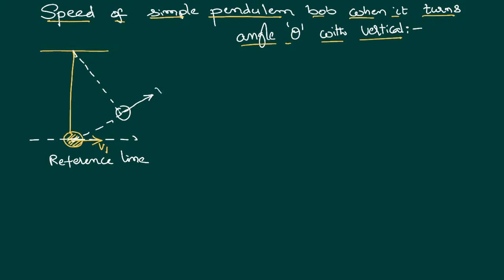We would like to calculate what is the velocity acquired by the body at this point. If you observe, with reference to the point earlier, the bob is at the mean position itself, so it is not having any potential energy. But now it has acquired a height h.